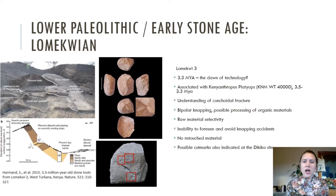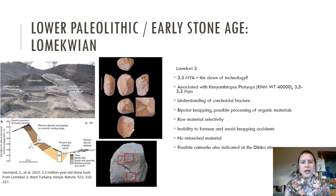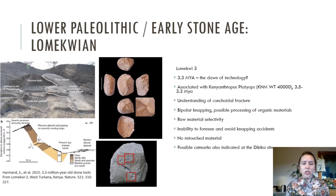Other features of these stone tools are pecking marks, which suggests potentially the processing of organic materials such as nuts. We can assess that these hominins were doing bipolar napping — resting the core on an anvil and then striking it with the hammer stone. Overall, the Lomequi site shows an understanding of conchoidal fracture in material and evidence of raw material selectivity. It also indicates an inability to foresee and avoid napping accidents and a lack of retouched material, so a lot of napping accidents are present in the Lomequian.